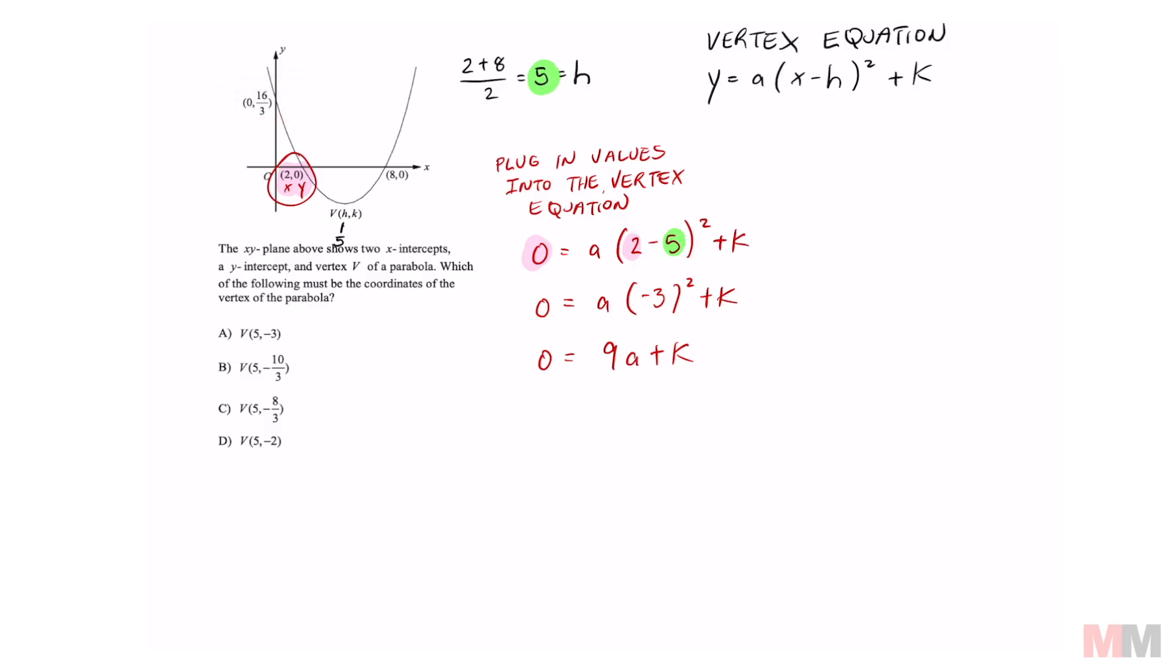We can't avoid it. So you're going to run the same step once again. That's going to be your x and y and plug it in the same exact way as we did with this work in red. It's going to get me 16 over 3 equals a in parentheses. My x value now is 0 minus 5 squared plus k. That's going to simplify to 16 over 3 equals 25a plus k because negative 5 squared is 25.